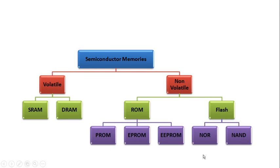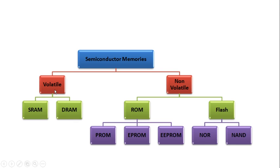Memories are classified as volatile and non-volatile. Volatile memory loses its content when power is lost — examples include Static RAM (SRAM) and Dynamic RAM (DRAM). Non-volatile memory retains content even without power — examples include ROM and Flash memory. ROM types include PROM and EEPROM; Flash memory types include NOR and NAND-based flash. These will be studied in detail in upcoming videos.